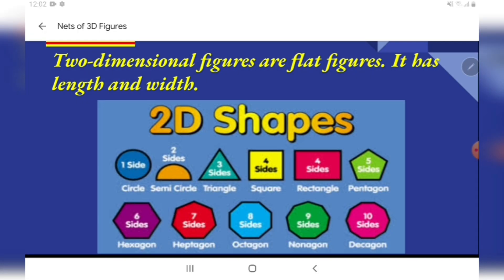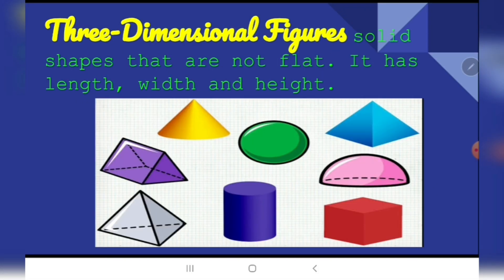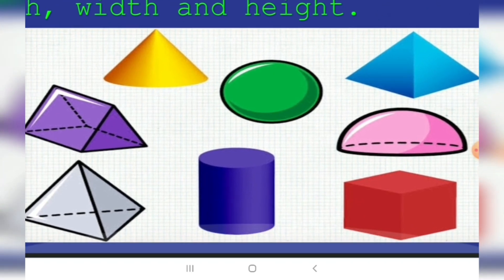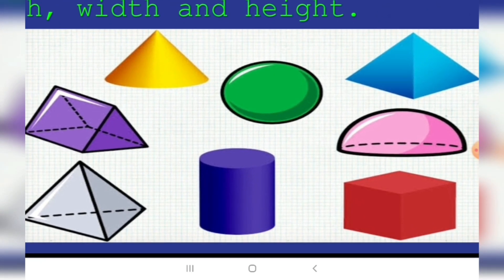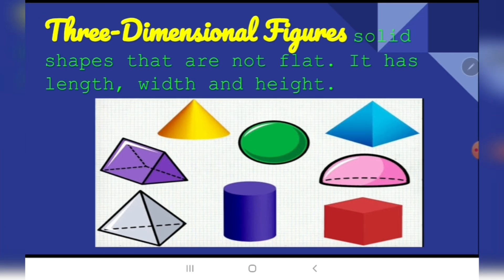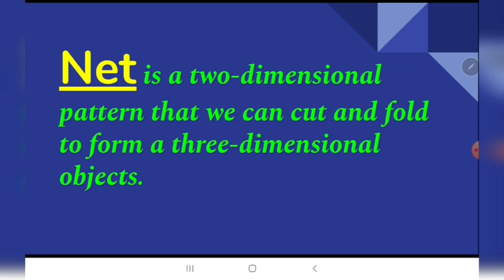Three-dimensional figures are solid shapes that are not flat. They have length, width, and height. Examples include cone, sphere, square pyramid, hemisphere, cylinder, cuboid, triangular pyramid, and triangular prism. Those are the examples of three-dimensional figures.